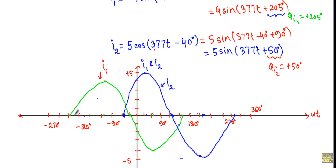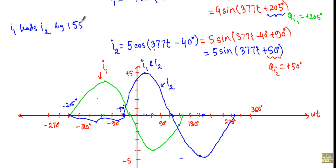Looking at the origins: I1 is at minus 205 degrees and I2 is at minus 50 degrees. Since I1's origin is further ahead, I1 leads I2. The angular displacement between the two origins is 155 degrees — calculated as the distance from minus 50 to minus 205: 130 degrees across full intervals plus 25 degrees more, totaling 155 degrees. Therefore, I1 leads I2 by 155 degrees.